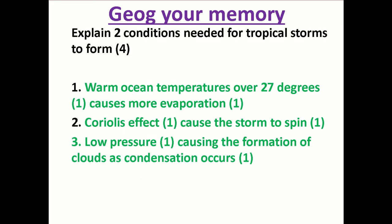The first condition we're going to focus on is warm ocean temperatures above 27 degrees. If you have warm ocean temperatures above 27 degrees, this is going to cause more evaporation — it generates the energy and the power for your tropical storm formation. Your first mark is for identifying that factor, and your second mark is for developing and explaining the point you have made.